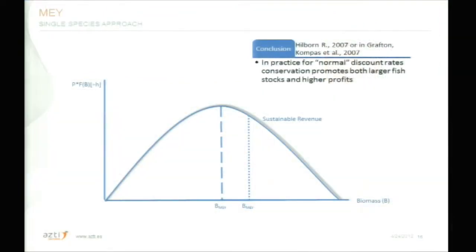I am not going to enter the debate of which discount rate is the right one — there is a big debate about that. We have to consider the present basis of future necessities, which are not the same for different users and different resources. But I would like to mention that the discount rate is critical from an economic point of view. And citing Hilborn, Rafton, and Compass in 2007: for normal discount rates, conservation promotes both larger fish stocks and higher profits.